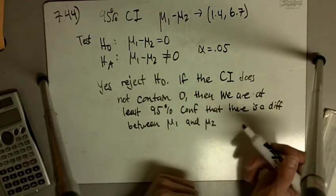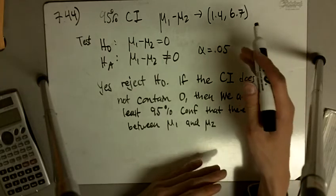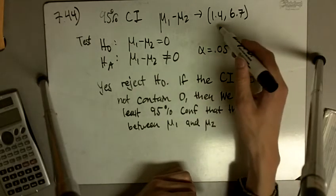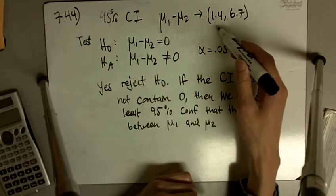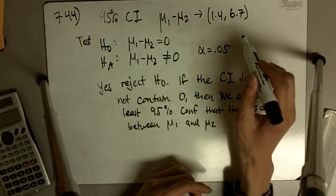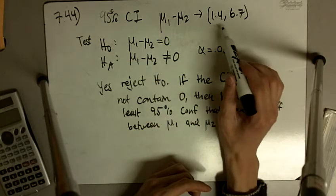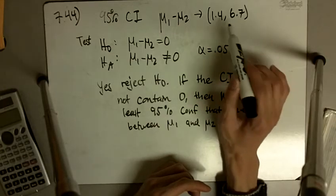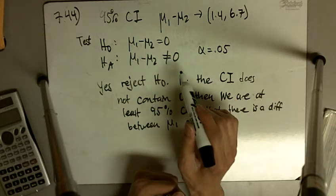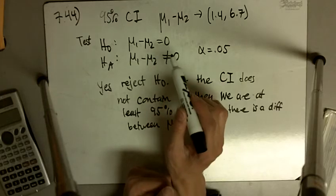So if we're 95% confident that it's in between 1.4 and 6.7, that means we're confident that μ₁ is bigger than μ₂. That difference might be bigger only by 1.4, or it might be bigger by as much as 6.7, but we're at least 95% confident that it's bigger than μ₂ by some value in this range, which means that our null hypothesis saying that there is no difference is going to be rejected.